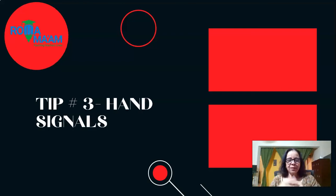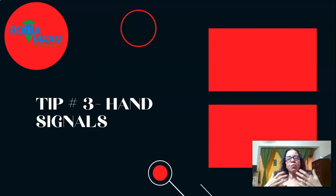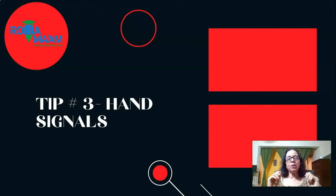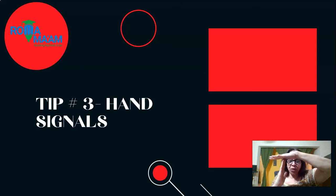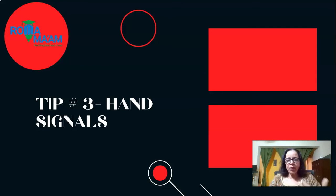Tip number three: using hand signals. When you want to convey something and you know that your children are not going to listen to your voice, you start making different hand signals for them and educate them about the hand signals. For example, if I want to say your time is out, I would just do this — this would mean that time is up and you need to now settle down in class. This is just one example; you would create so many on your own depending on the kind of audience that you have.